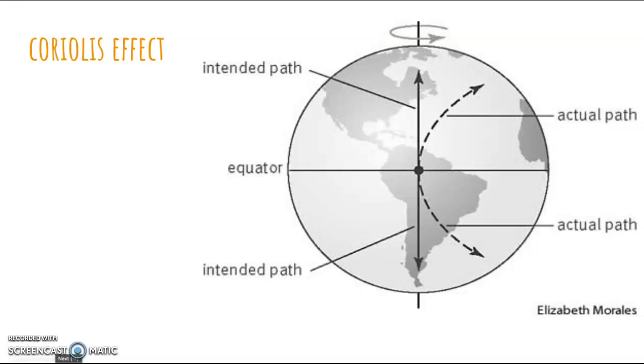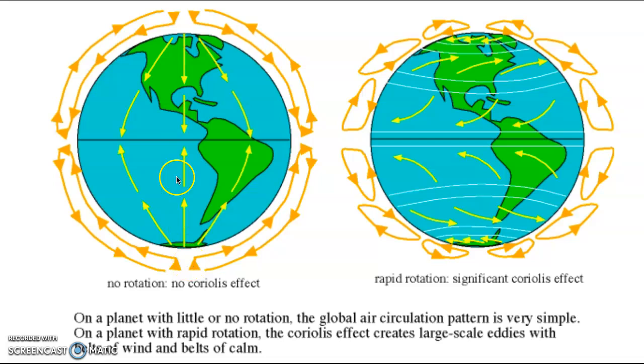In this slide, I will use two pictures to show the difference between the intended path and actual path. This one shows no rotation, meaning no Coriolis effect on Earth. But this one shows rapid rotation with deflection by the Coriolis effect.